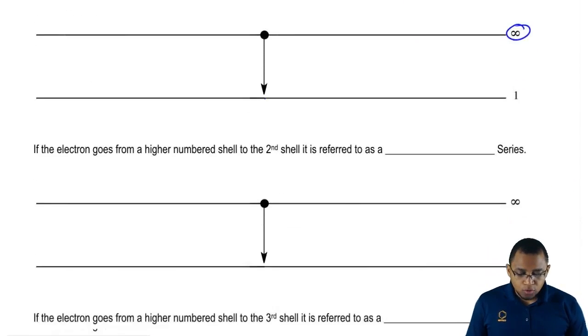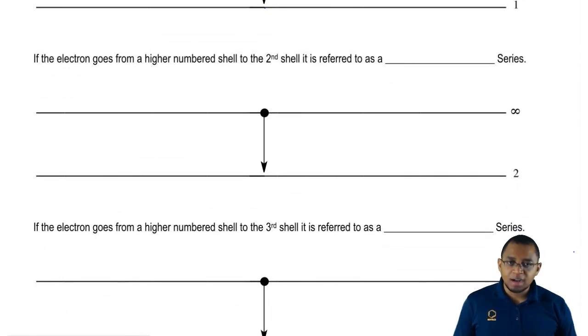If the electron goes from a higher numbered shell to the second shell, it's no longer called a Lyman series, it's going to be called a Balmer series. So again, any number higher than 2, 3 to 7, if we start at any one of those levels and come back down and rest at level 2, shell 2, then it's a Balmer series.